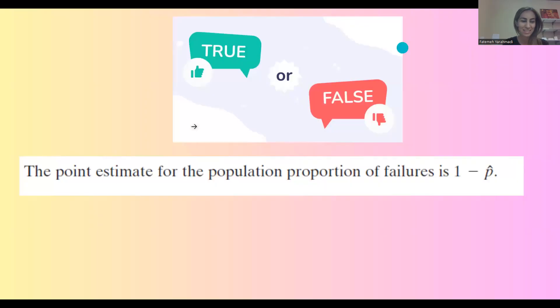Is this true or is this false? The point estimate for population proportion of failures is 1 minus p hat.